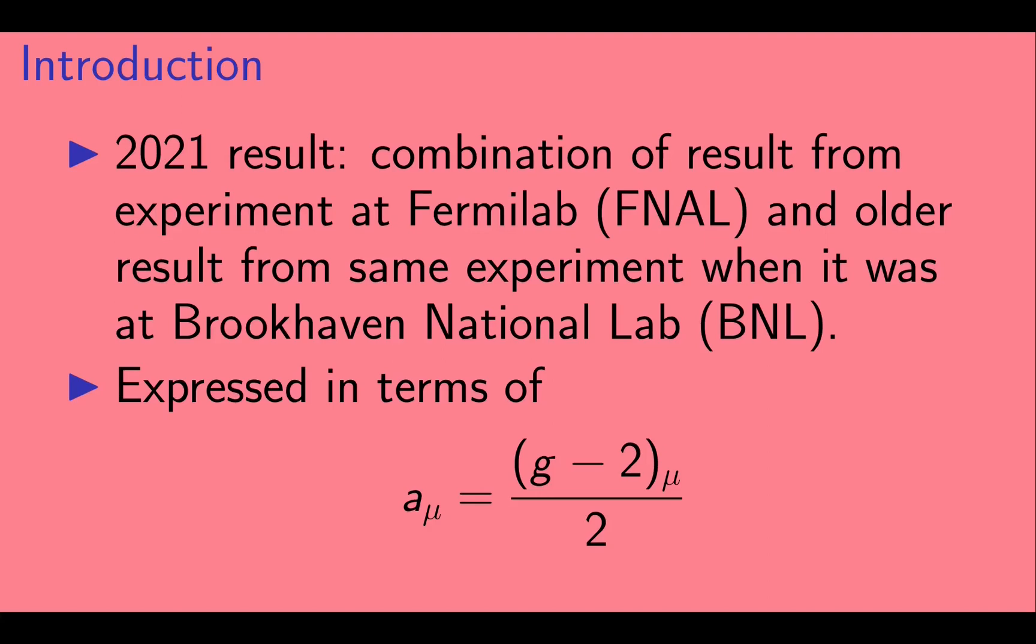That result from 2021 was a combination of the then-new result from Fermilab and an older result from the same experiment when it was located at Brookhaven National Lab. That result was expressed in terms of a quantity A_mu, which is the anomalous magnetic moment of the muon and is just muon g-2 divided by 2.